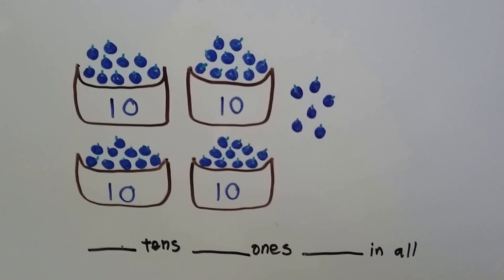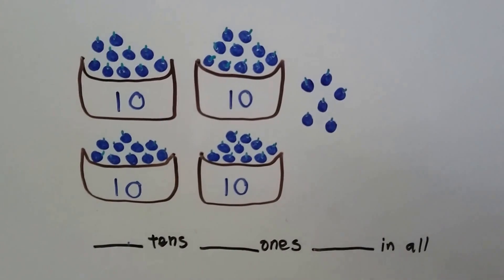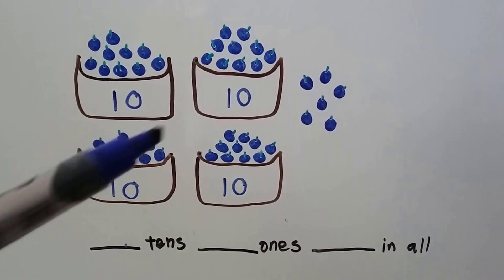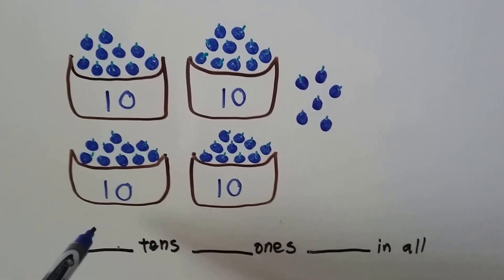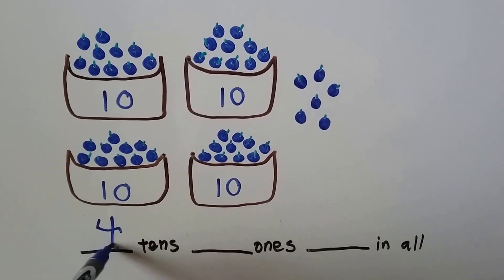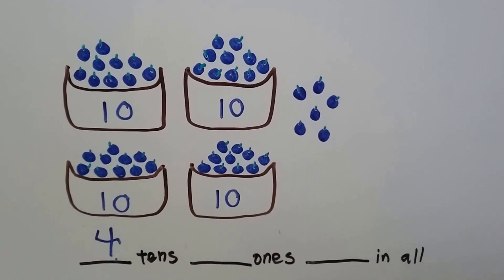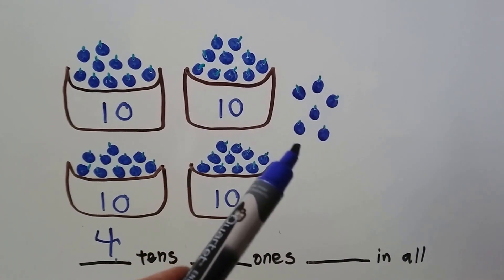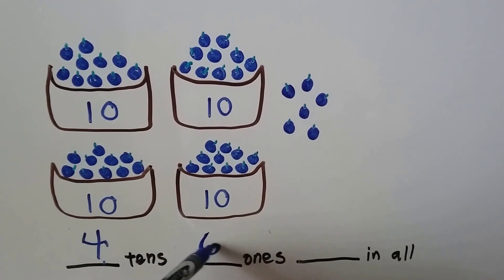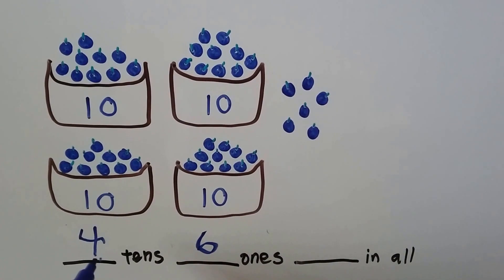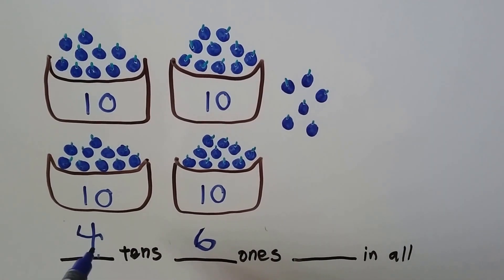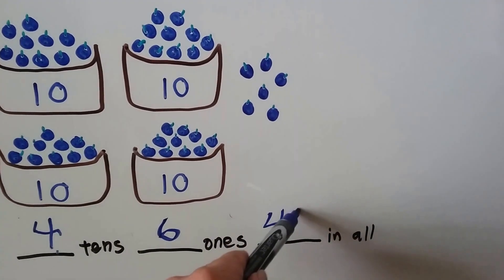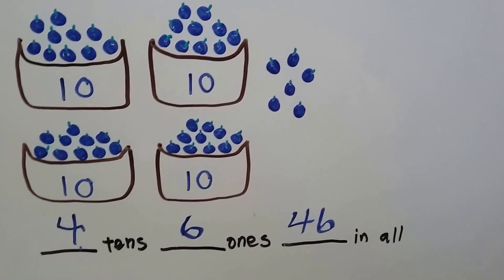Each bowl of blueberries is ten. How many tens do we see? One, two, three, four. How many ones do we see? One, two, three, four, five, six. That's forty-six. Four tens and six ones. Forty-six.